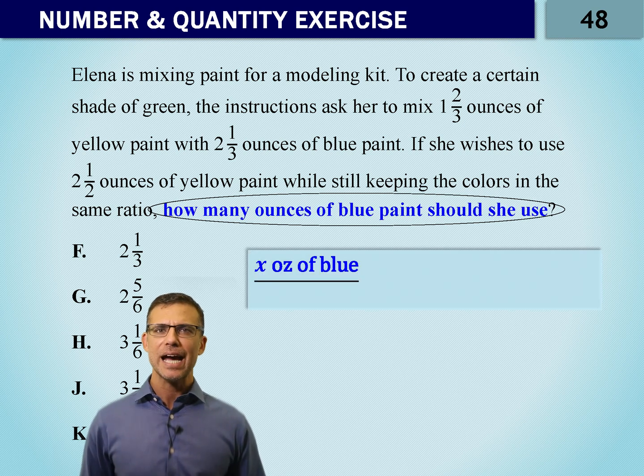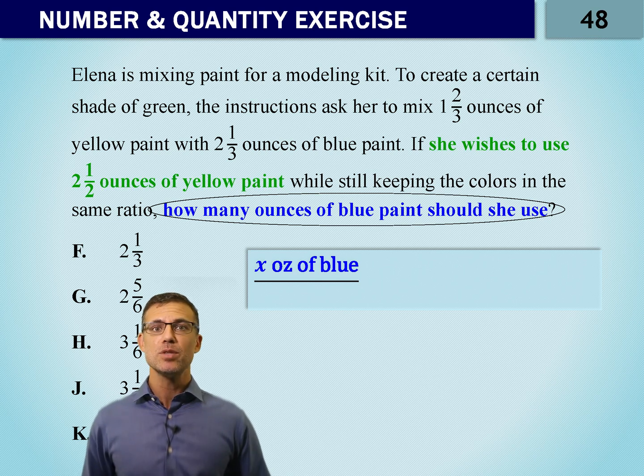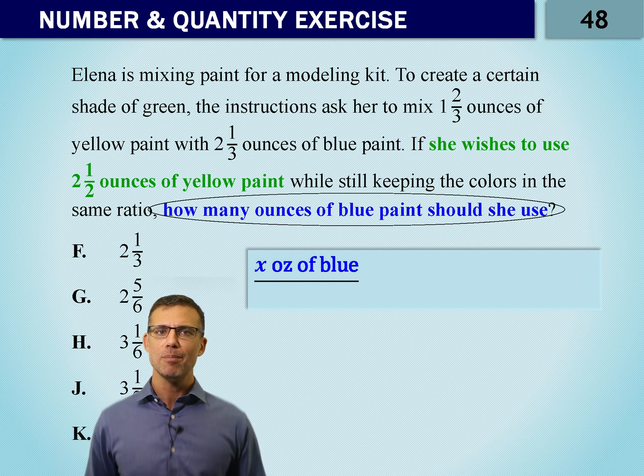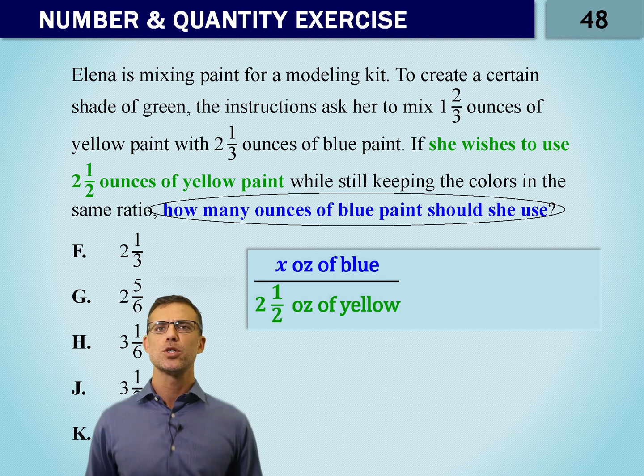So we have to write X ounces of blue. That's the top of our ratio. What we want to do is keep them separate. So if blue is on the top, yellow has got to be on the bottom. So we have two and a half ounces of yellow. We've got X over two and a half.